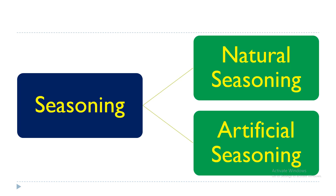Seasoning may be broadly classified into two types: natural seasoning and artificial seasoning. Natural seasoning is also called air seasoning, and the seasoning is done in open sheds and not in direct sunlight. The seasoning is done in order to improve the strength of the timber.